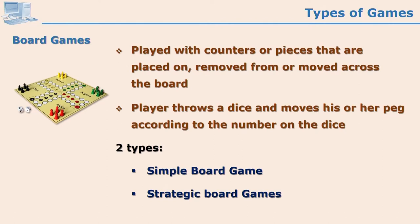There can be simple or strategic board games. In strategic board games, the learner's decision is very crucial. For example, in a snake and ladder type game: if the learner decides to cut a tree in the way of their garden, the snake will swallow the learner. But if the learner says to beautify and maintain the tree, the learner may get a ladder to jump. This is how board games help learners acquire skills and improve decision-making ability.